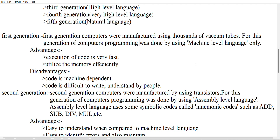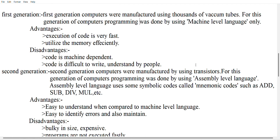In the second generation, computers were manufactured using transistors. In the first generation we used vacuum tubes, and here in the second generation we use transistors. The programming language used in this generation is assembly level language. In machine level language we use only zeros and ones, whereas assembly level language uses symbolic codes.